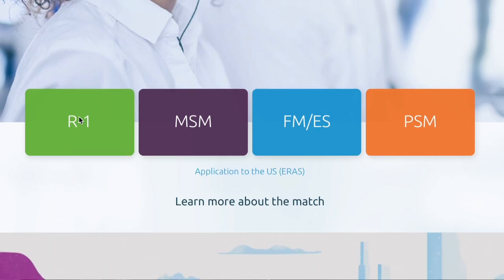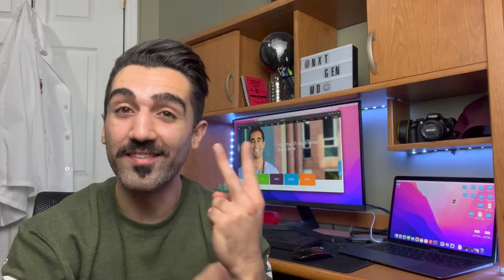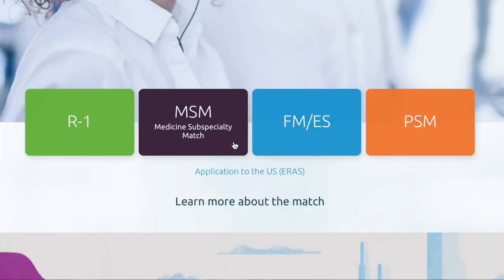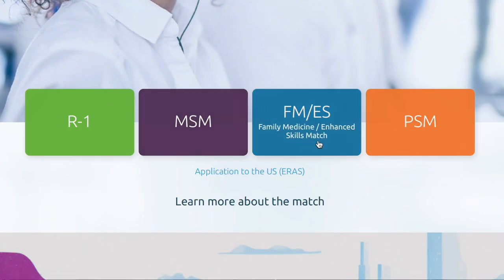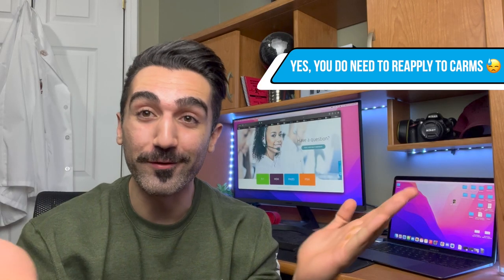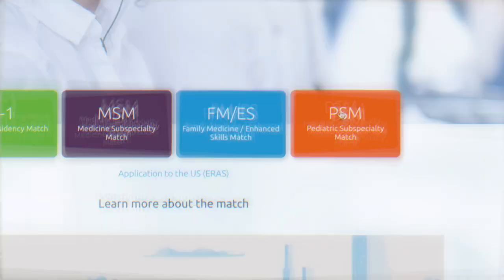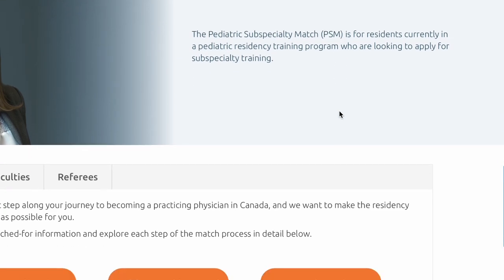The R1 match — R1 refers to residency one, your first year of residency — is for anyone that just finished medical school looking to officially start residency. The second match is the MSM or Medicine Subspecialty Match, for individuals who have completed basic training in internal medicine and are now subspecializing in gastroenterology, cardiology, or other internal medicine subspecialties. The third is the FM/ES match — Family Medicine slash Enhanced Skills — for additional training after your first two years of family medicine into areas like anesthesiology, emergency medicine, or OB. The fourth is the PSM, the Pediatric Subspecialty Match, for things like pediatric neurology after basic pediatrics training.